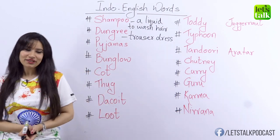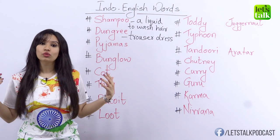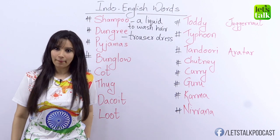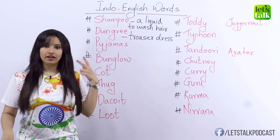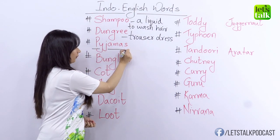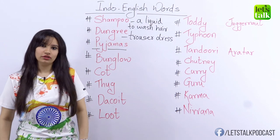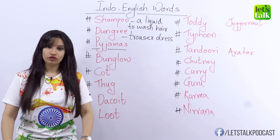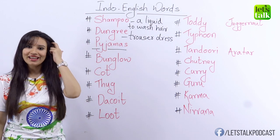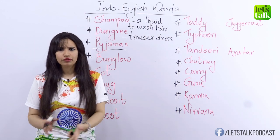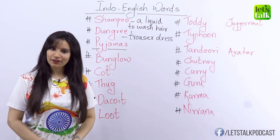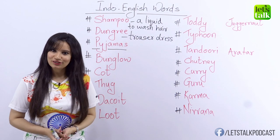The third word is also related to dressing — pajama. Pajama is a leg garment. It comes from two Sanskrit words: Pai and Jama. Pai means feet and Jama means garment. So the garment you wear on your legs is called a pajama. If you go out shopping and ask for dungary or pajamas, you'll definitely find both of them even in an international store.